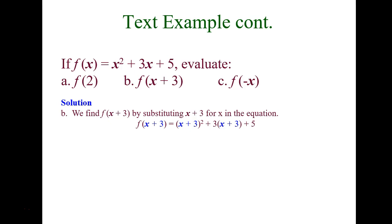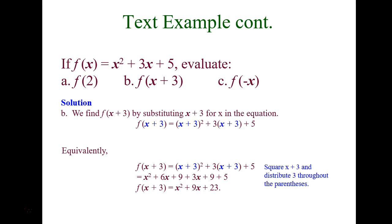Next, same function, they want us to evaluate f(x + 3). Wherever we have x in the expression, we replace it with (x + 3): (x + 3)² + 3(x + 3) + 5. We won't get a number this time — we're replacing x with another expression, so we simplify in terms of x. Make sure (x + 3)² is foiled — don't just say x² + 9, you must foil it to get x² + 6x + 9. Distribute the 3, combine like terms, and we get x² + 9x + 23.